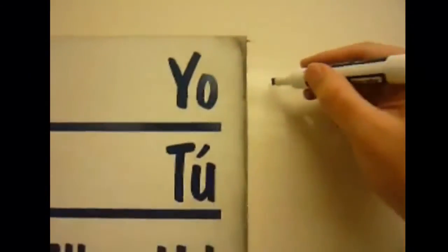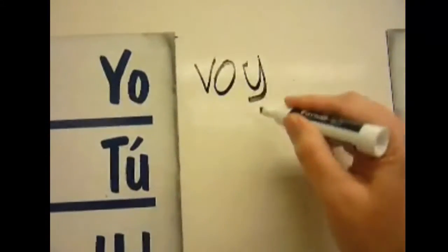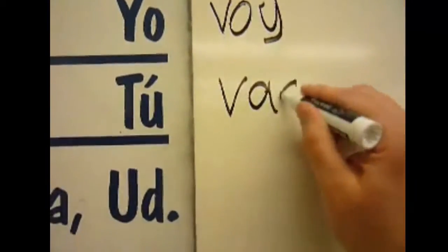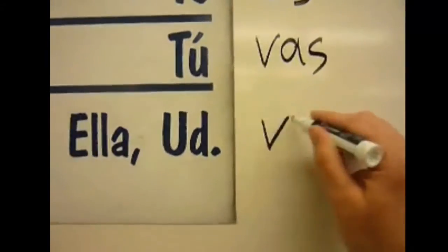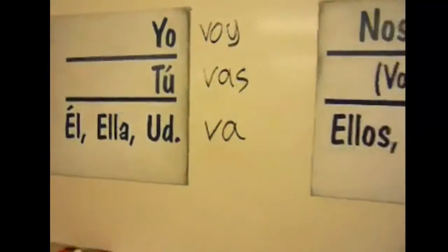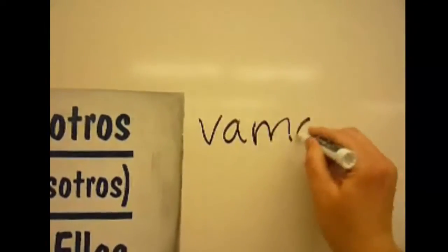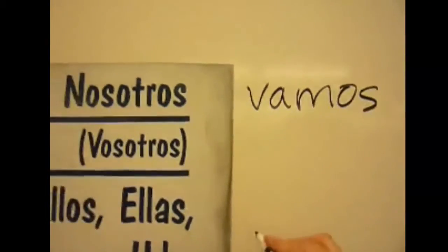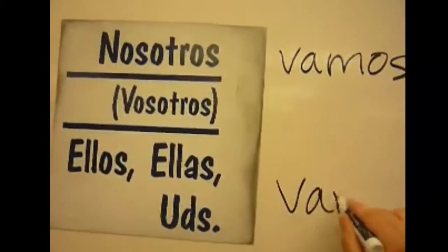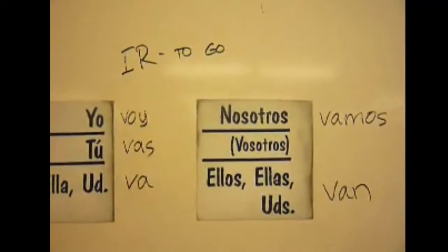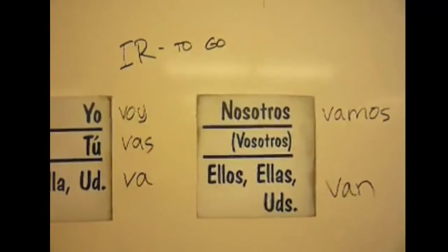First one is ir, to go. Now let's review the present tense first. Let's start with voy, vas, va, I go, you go, he, she, or usted goes, nosotros vamos, and ellos, ellas, ustedes van. That's regular present tense conjugation, voy, vas, va, vamos, van, hopefully you remember those.